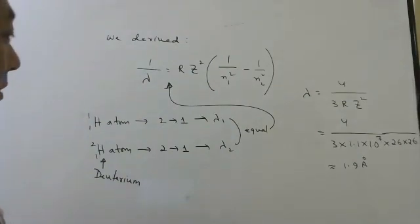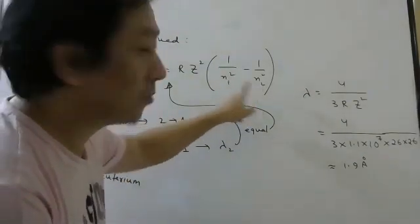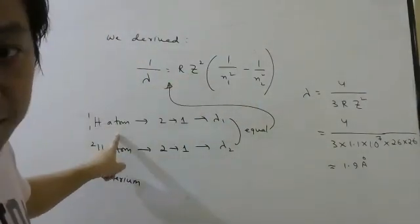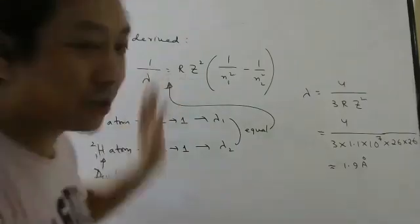Yes or no? 2 to 1, 2 to 1 in both cases. Z is how much for hydrogen? One. For deuterium? One. So it should be same or not.